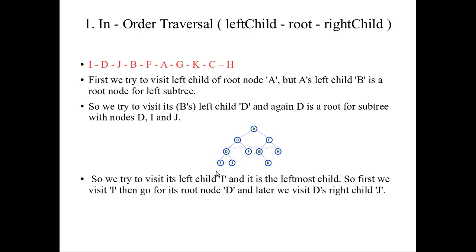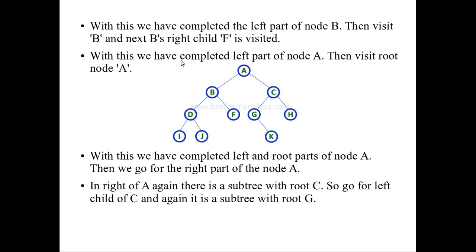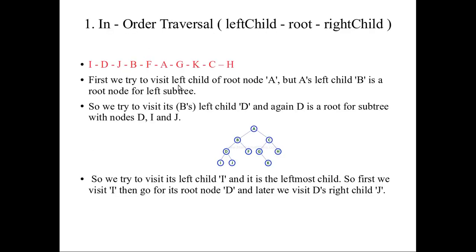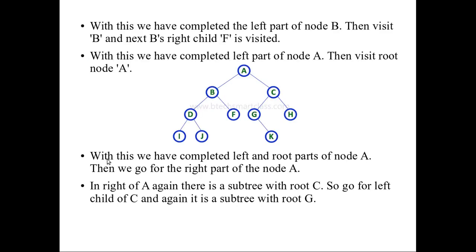The left side of node B is now complete. We then write node B, which is the root, and then visit F, which is the right child of B. With this, the entire left subtree of root A is completed. We then visit root A. After visiting A, we go to the right child.